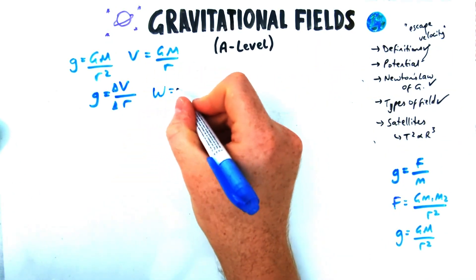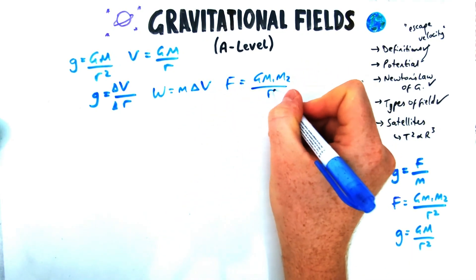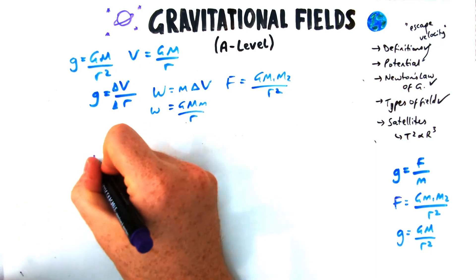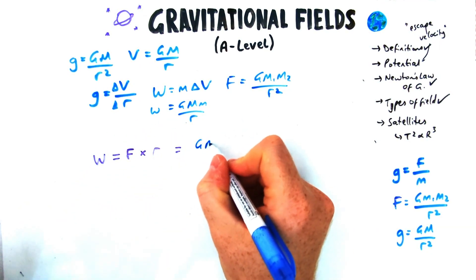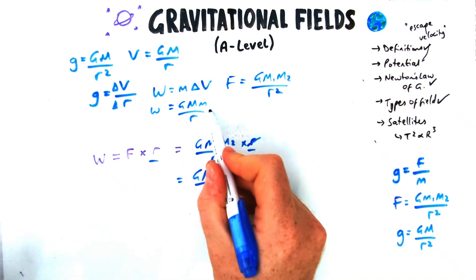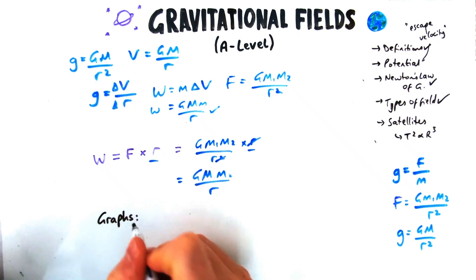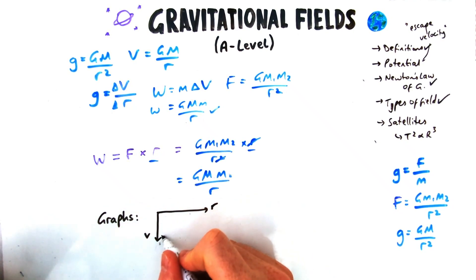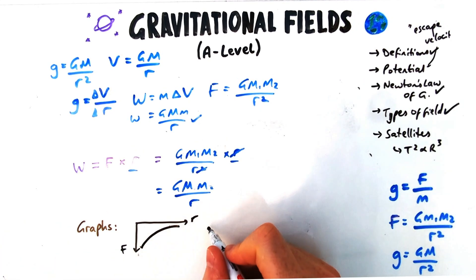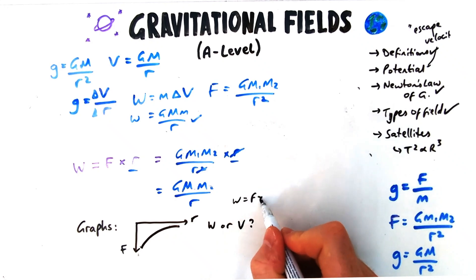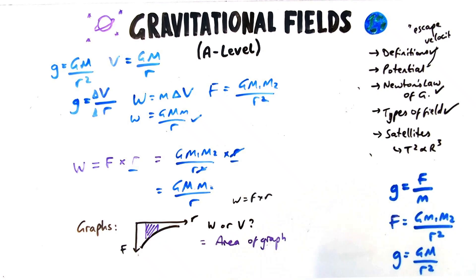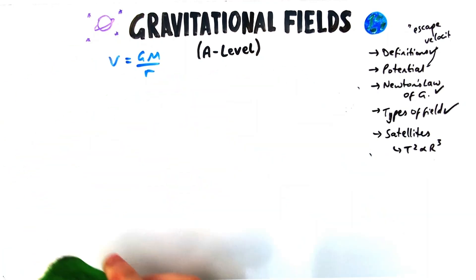It really helps to know where equations come from so you can answer graph questions. For example, work done = GMm/r and force = GMm/r². Since work done equals force times distance, force times r cancels r² to give r — the expression for work done. On a potential-r graph, gravitational field strength equals the gradient. On a force-distance graph, work done or gravitational potential is represented by the area between two points, which you'd divide by mass to find potential.